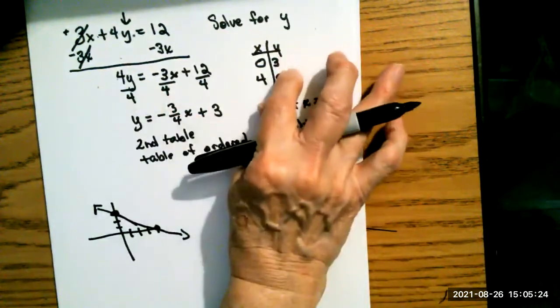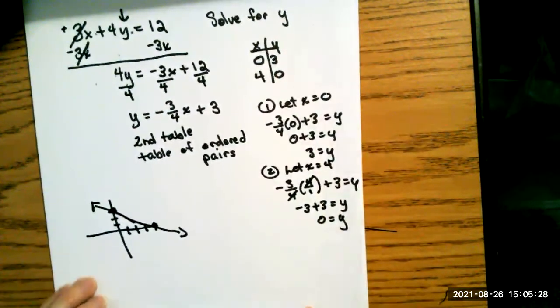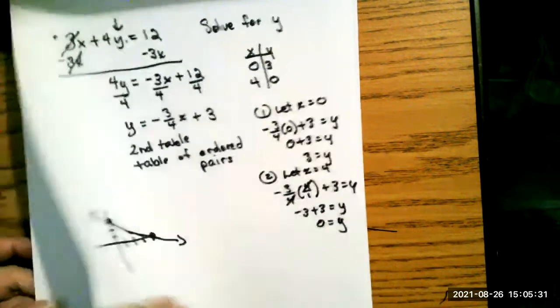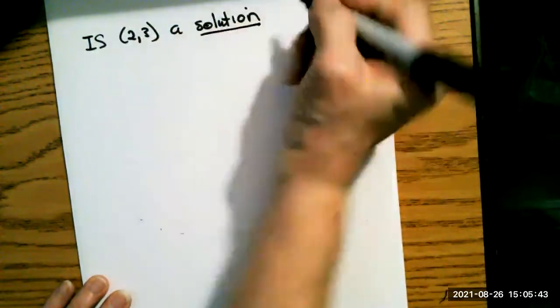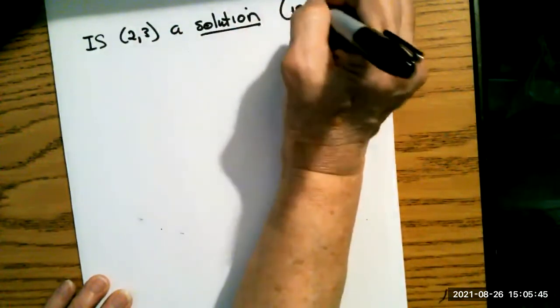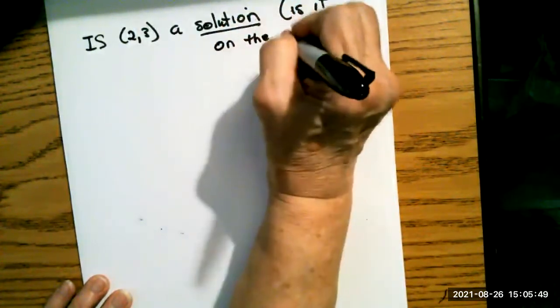Now, these are called solutions to the problem. So I may have some problems, and in the support section, have some problems that ask, is 2, 3 a solution? Solution means, is it on the graph?